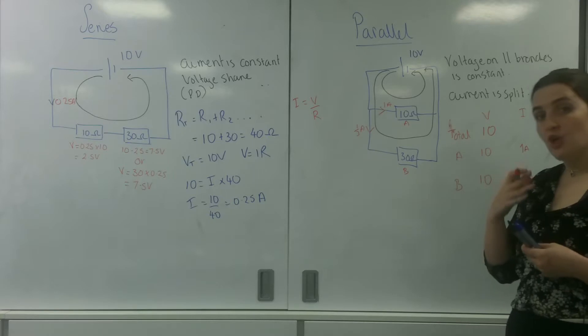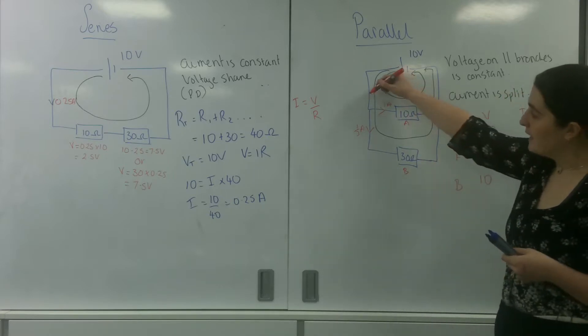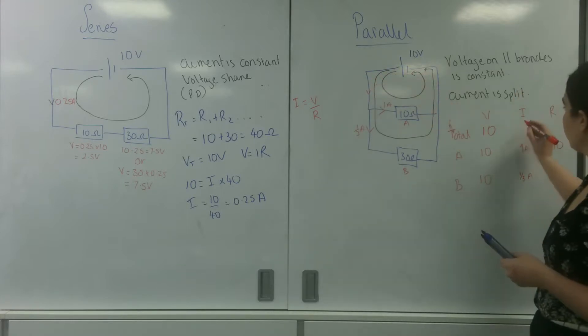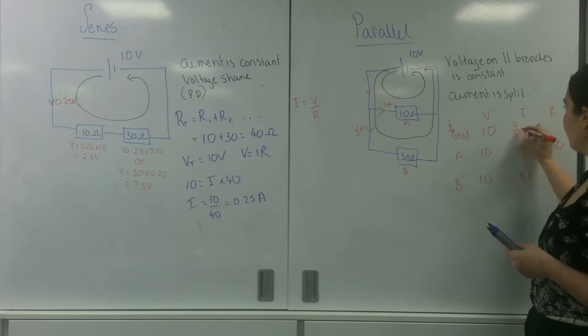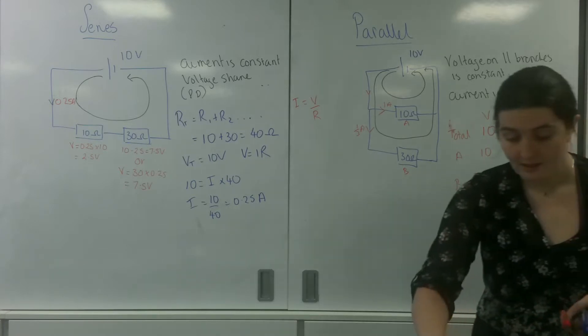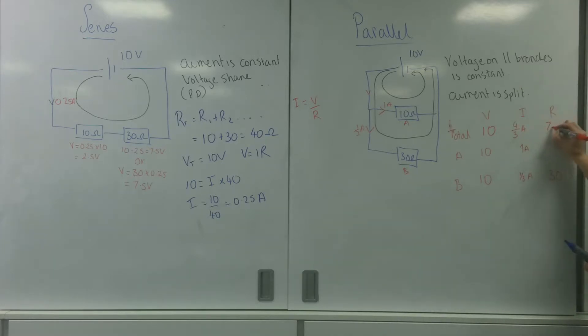So I know going down here is 1 and going down here is a third of an amp, which means in total if we use Kirchhoff's current law I must have 1 and a third amps or 4 thirds of an amp. I now know the voltage, I now know the current, I can work out the resistance. So 10 divided by 4 divided by 3 is 7.5 ohms.